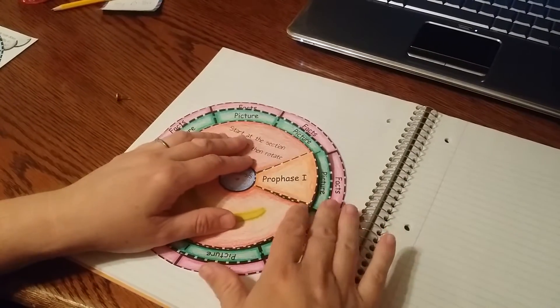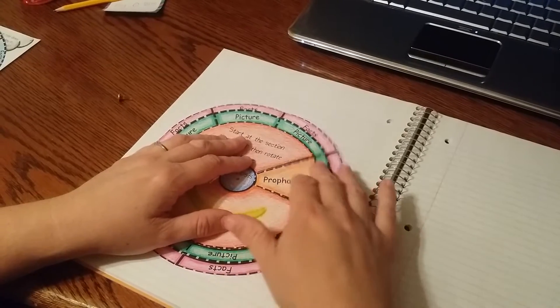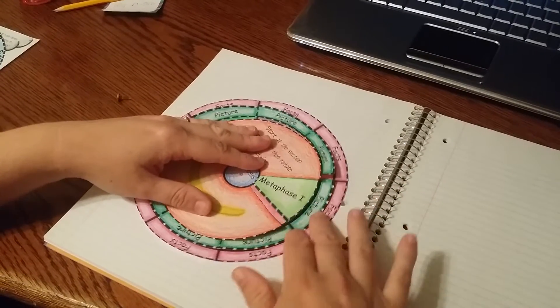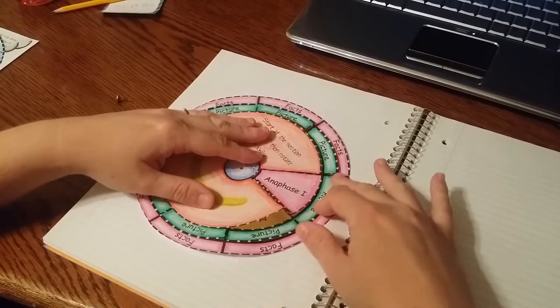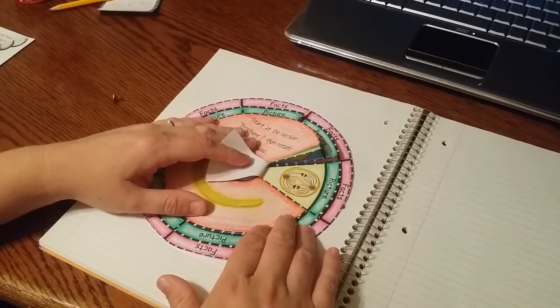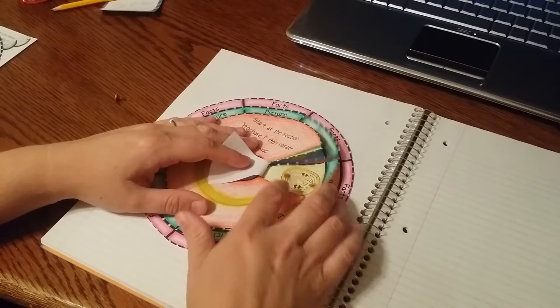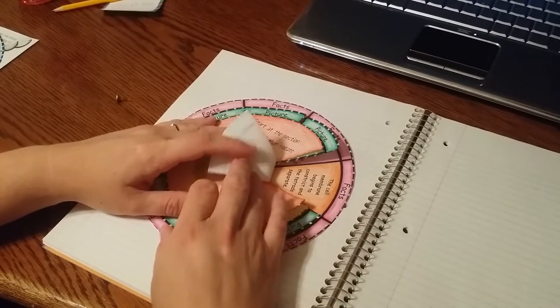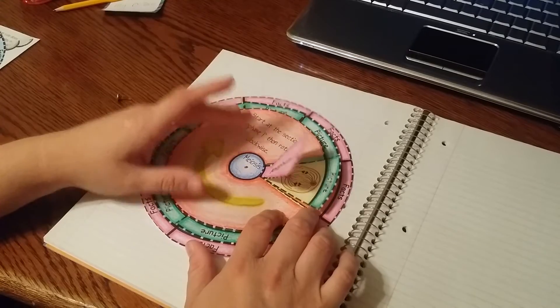So, for example, they can start at Prophase 1 and then they can move along the wheel and see the different phases. They can lift up the first tab and it will show the picture of the phase, and then they can lift up the next tab and it will show the facts.